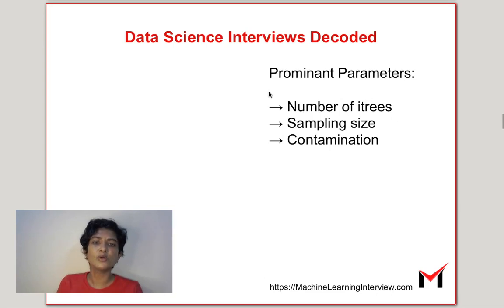So what are some prominent parameters, hyperparameters of this particular algorithm? One is the number of itrees just like in a random forest. Another parameter is the sampling size m that we have seen. And the third parameter is the contamination.